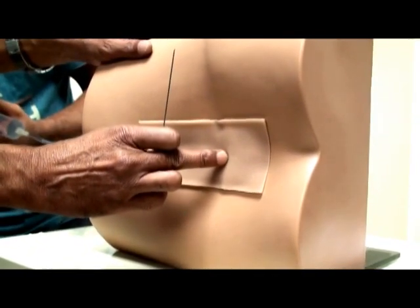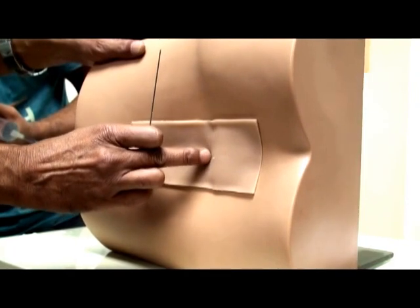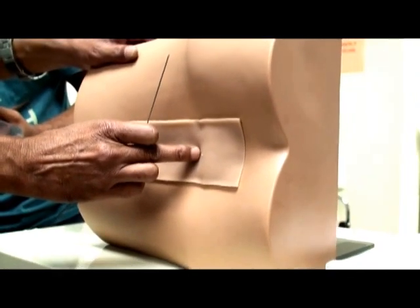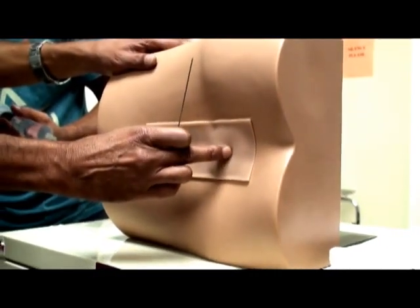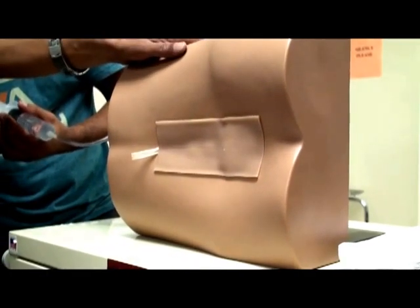Once we feel the L4 spinous process, we go one space above that, that is the L3-L4 interspinal space. Sometimes we can go one space below that, that is L4-L5 spinous. These are the usual spaces that we use.